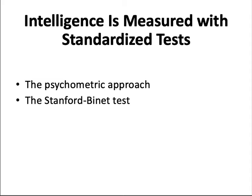Intelligence is measured with standardized tests. The psychometric approach to measuring intelligence focuses on how people perform on standardized tests. Some psychometric tests focus on achievement, while others focus on aptitude. A scientist named Binet proposed that intelligence is best understood as a collection of high-level mental processes. Psychometric tests of general intelligence include the Stanford-Binet test, which measures intelligence using the intelligence quotient, or IQ score.